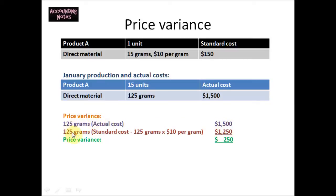Next step is to record the cost that should have occurred. 125 grams should have costed $1250 because we know that one unit can be produced at $10 per gram cost. So 125 grams at $10 will give you $1250.